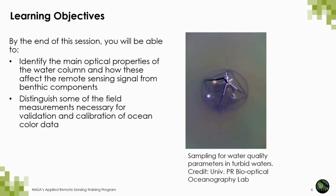Here are the learning objectives for this session. By the end, you will be able to identify the main optical properties of the water column and how these affect the remote sensing signal from the benthos. In particular, we will talk about inherent and apparent optical properties. You will also distinguish typical field measurements necessary for the validation and calibration of ocean color data, and identify differences in the spectral signal of main benthic components of a coral reef after water column corrections.